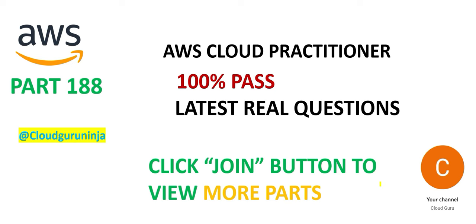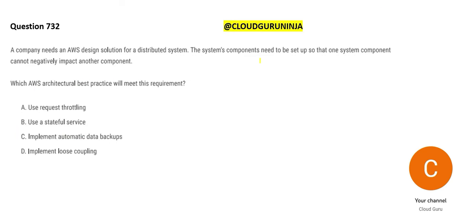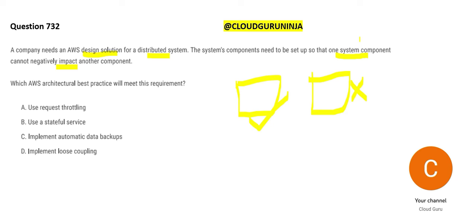Let's look at the next question. You need a solution for a distributed system where the components need to be set up so that one system component cannot negatively impact another. These two should be set up such that one cannot control the life of the other and vice versa — we should not get penalized for someone else's fault.